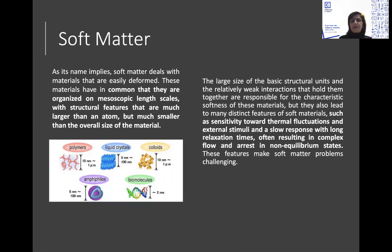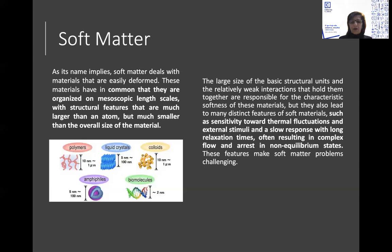Soft matter is a subclass of condensed matter and its main characteristic is that it is soft. By soft I mean it is easily deformed by weak external fields. There are many types of soft matter, and this 15-minute introduction is going to concentrate on the different types and highlight what makes these systems unique. They can be described as very sensitive to fluctuations, even thermal ones, and show very slow responses.